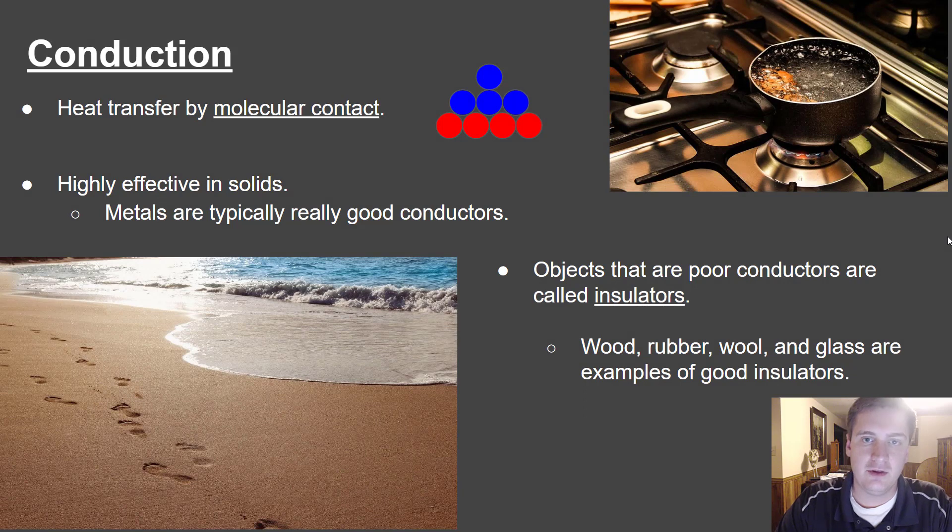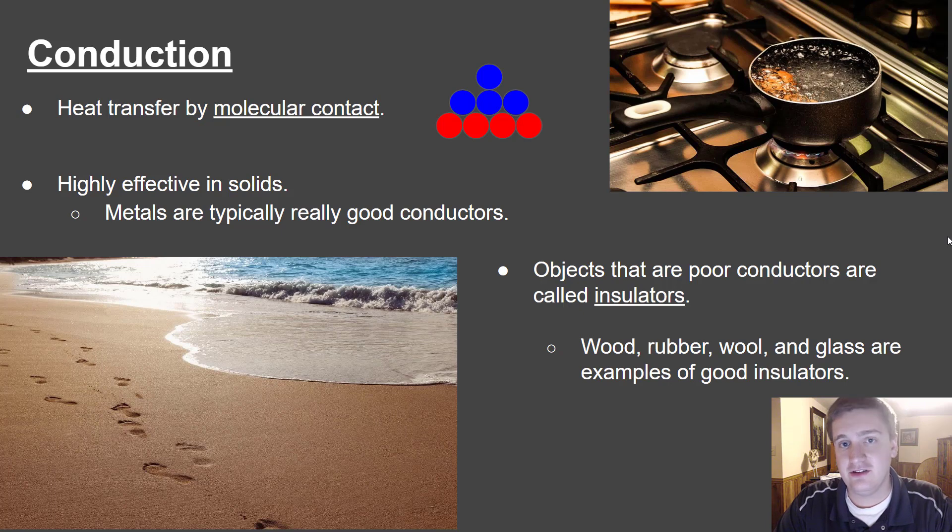Okay, so the first type of heat transfer that we're going to discuss in this video is conduction. Conduction is heat transfer by molecular contact. I'd say this is the simplest form of heat transfer. If you look at the set of dots here on the page, imagine you have some warm molecules that are interacting with cooler ones. We know that heat is going to be transferred always from warmer objects to colder objects. So over time, the warmer objects here on the bottom are going to directly transfer heat to the cooler objects that were on top. That's an example of direct molecular interaction.